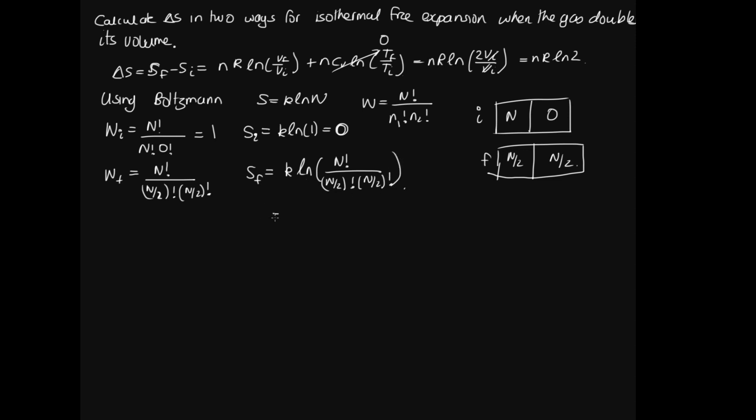Now this is a log. So we can use our log rules. When we divide by logs, we subtract the logs. So this is K log N factorial minus K log N on 2 factorial, and this thing's all squared. And when you have a square inside the log, you can pull the 2 out the front. So this is equal to K log N factorial minus 2K log N on 2 factorial.